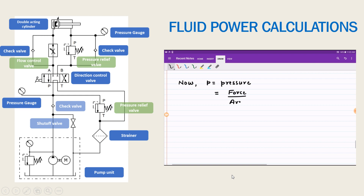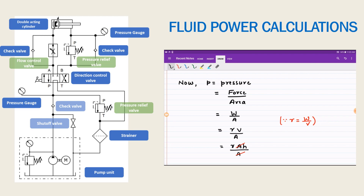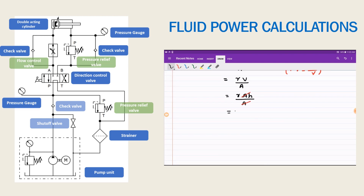Now we know that pressure is nothing but force exerted per unit area. The force is the weight of the liquid, and specific weight gamma is equal to weight per unit volume, so w equals gamma times v. Substituting: gamma times v divided by area, and volume equals area times pressure head h, divided by area. The area cancels, so pressure equals gamma into h, where gamma is specific weight in Newton per meter cube and h is the pressure head.